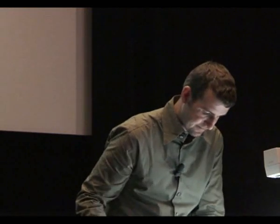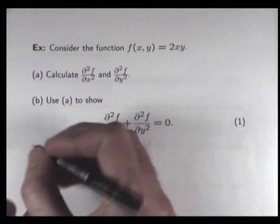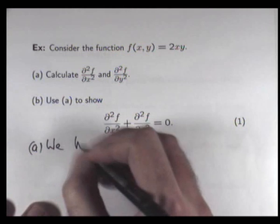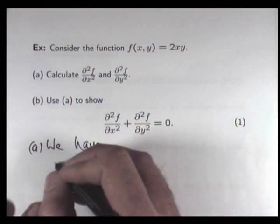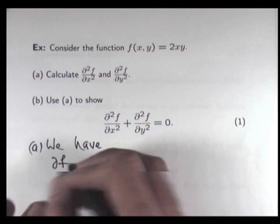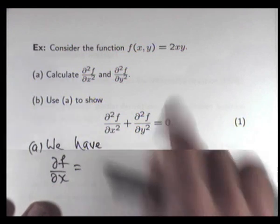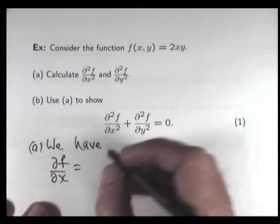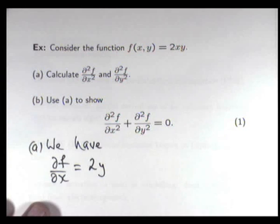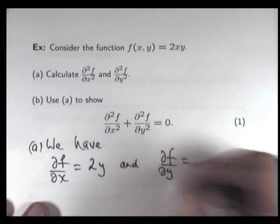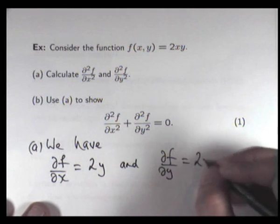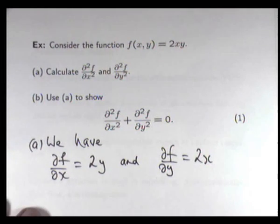All right. So let's do part a. We have the following. So ∂f/∂x is going to be 2y and ∂f/∂y is going to be 2x. So I've just calculated the first partial derivatives.